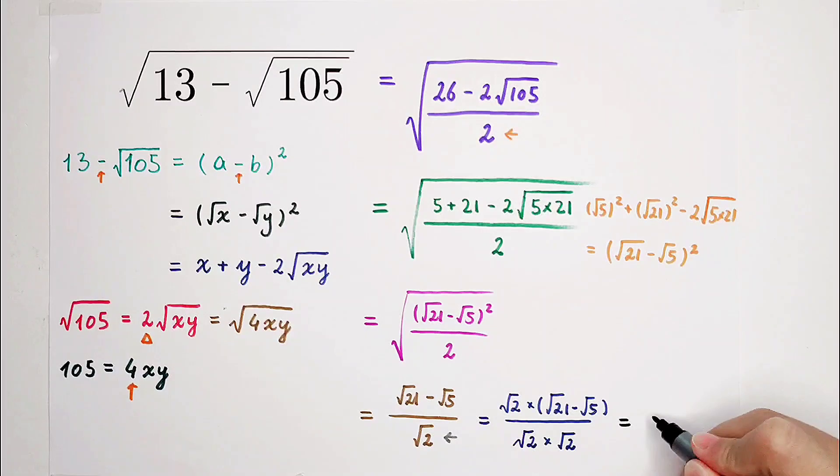The numerator, square root of 42 minus square root of 10, and the denominator, it is the prettiest, 2.